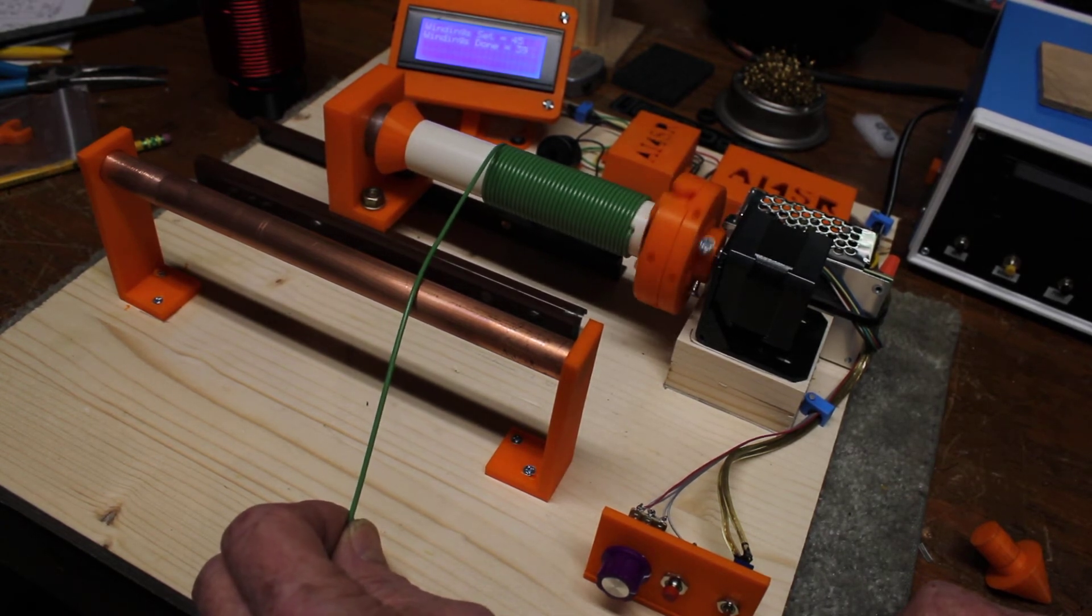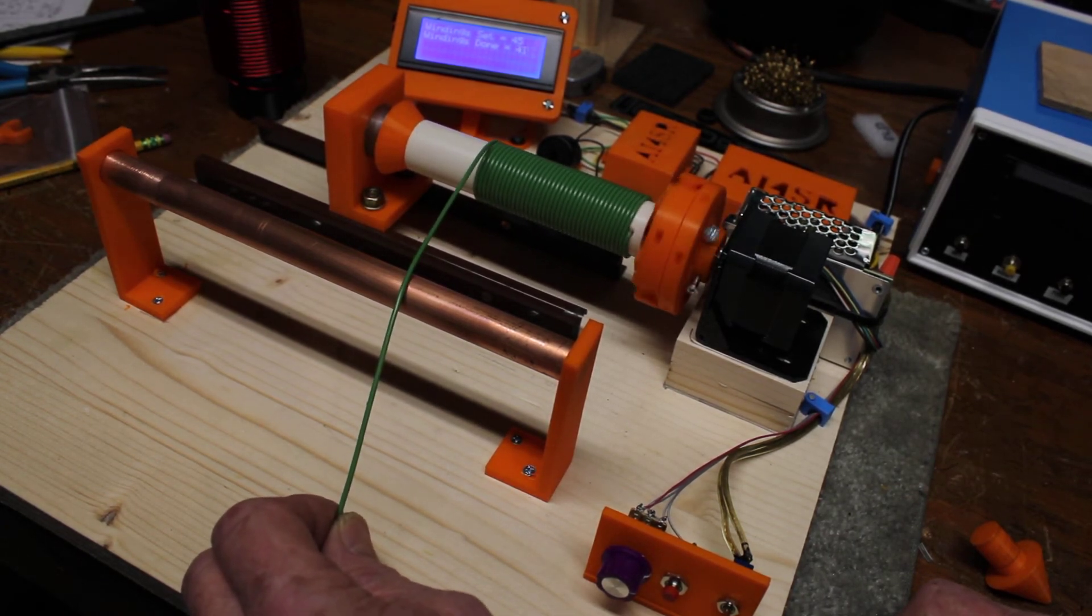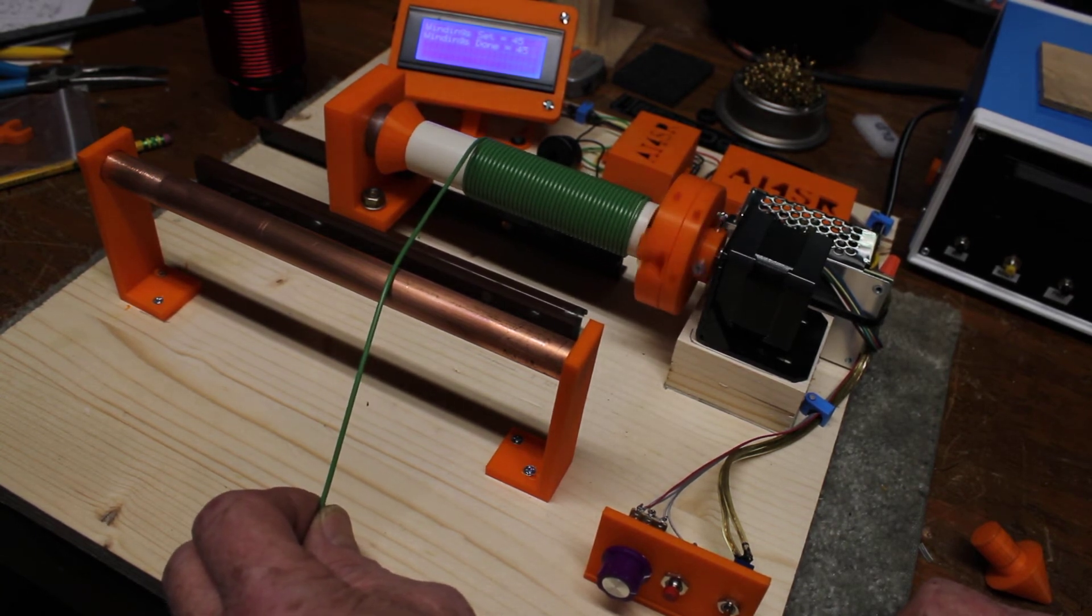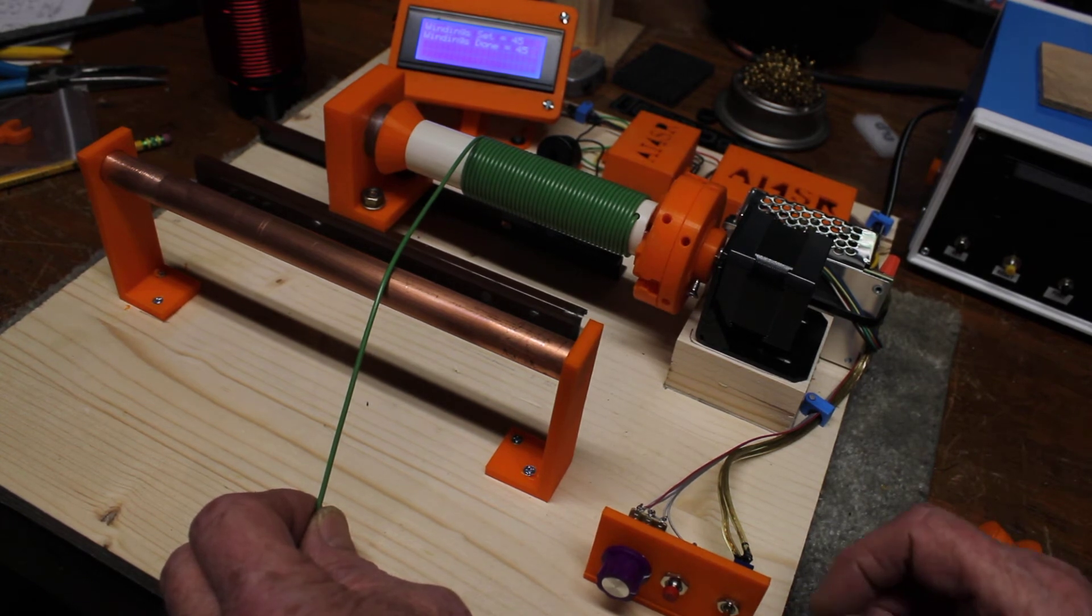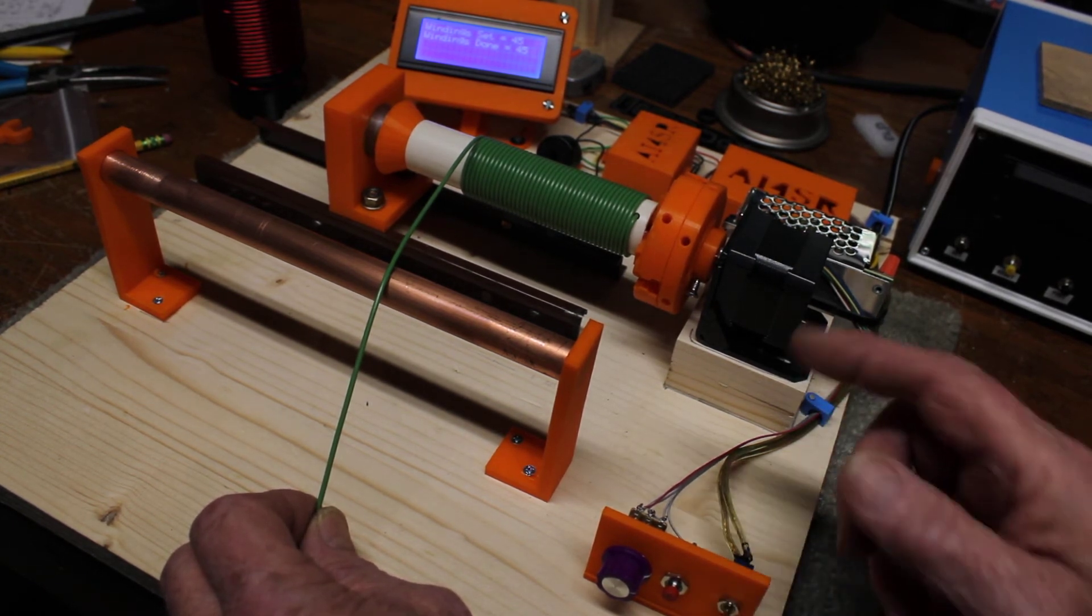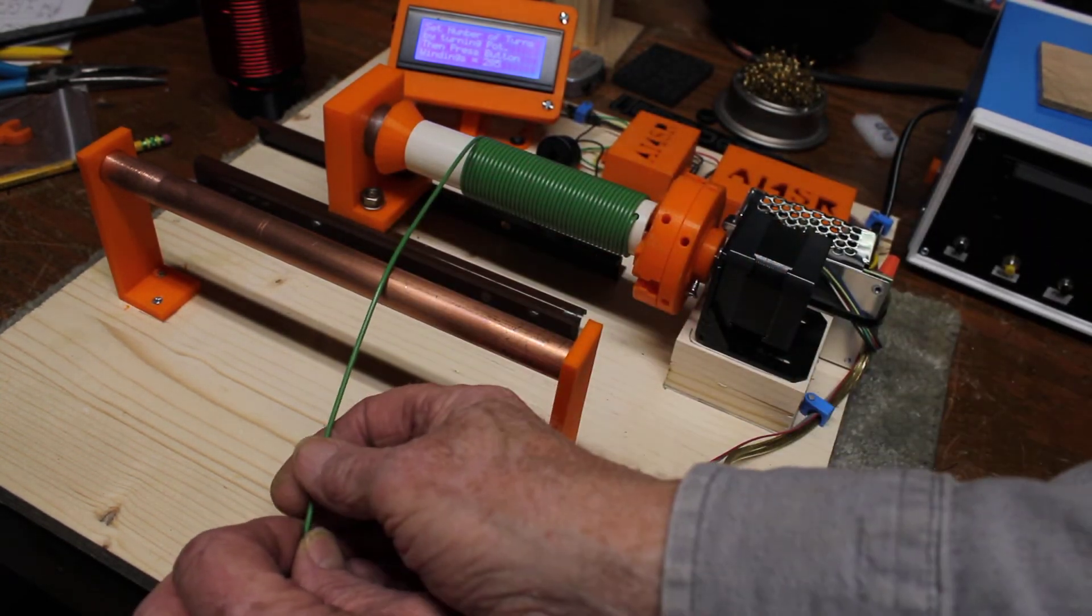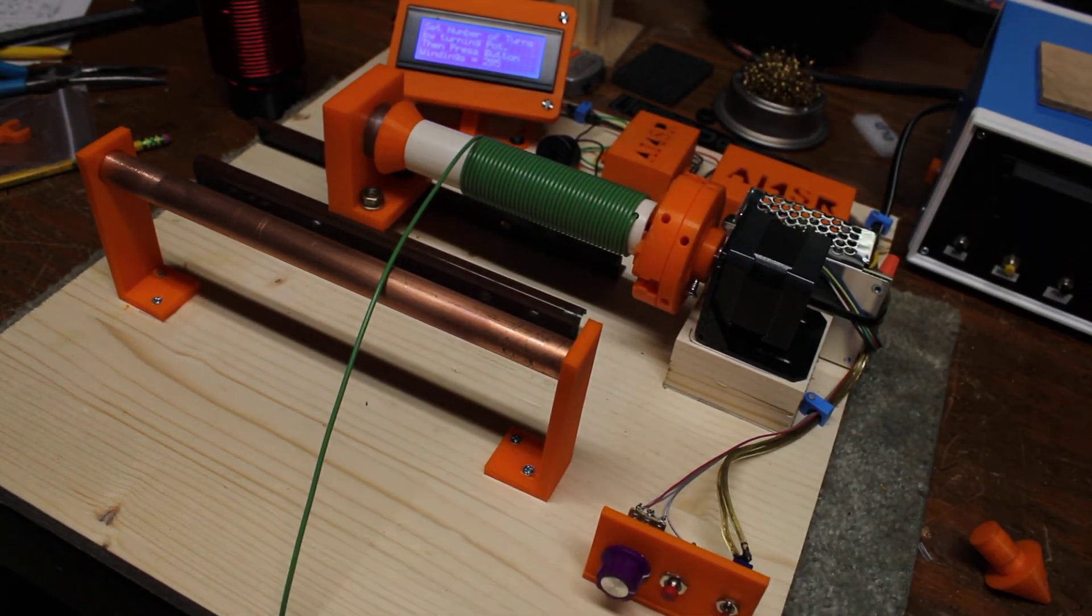37. 40. Almost there. Gives you an extra half a turn. There you go. It's 45 turns. We can leave it on. That keeps the stepper motor locked. And of course you can lace off the ends or do whatever you've got to do.